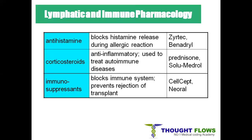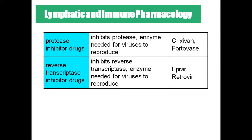Coming to pharmacology: antihistamine drugs are particularly given for allergic reactions. Corticosteroids are anti-inflammatory drugs used to treat autoimmune diseases such as rheumatoid arthritis and systemic lupus erythematosus. Immunosuppressants block the immune system and prevent rejection of transplants, like in graft versus host disease. Protease inhibitor drugs inhibit the protease enzyme needed by the virus to reproduce — usually given for HIV patients for daily management.